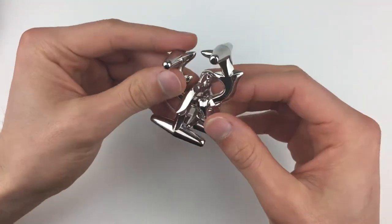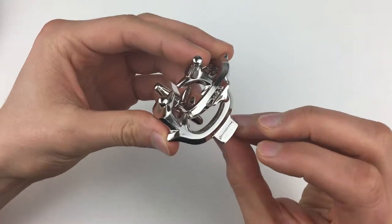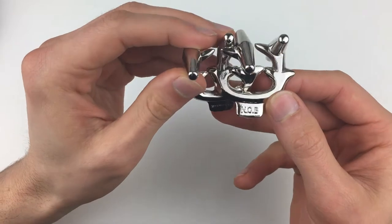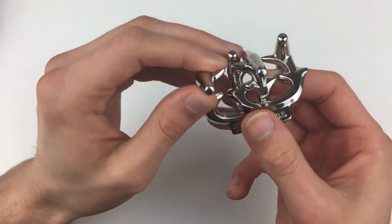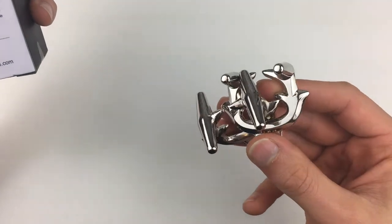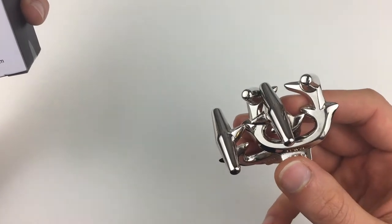So first things first are they identical? Well the first bit that differentiates them is the bit on the back. That one says Nob. No idea why it says Nob and that one says Hanayama. Ah because the Japanese designer is called Nob Yoshigahara.